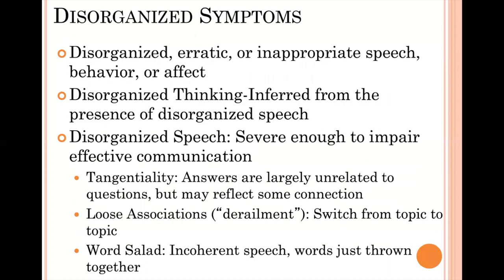The next category of symptoms are the disorganized symptoms, which include disorganized, erratic, or inappropriate speech, behavior, or affect — affect being how we show our emotion. Disorganized speech reflects disorganized thinking, so we can have a gauge into how someone is thinking by how they organize their speech. One example is tangentiality, where the person's answer to a question seems unrelated — tangential. For instance, if asked 'What is your mother's maiden name?', most of us would give a quick one-word answer.